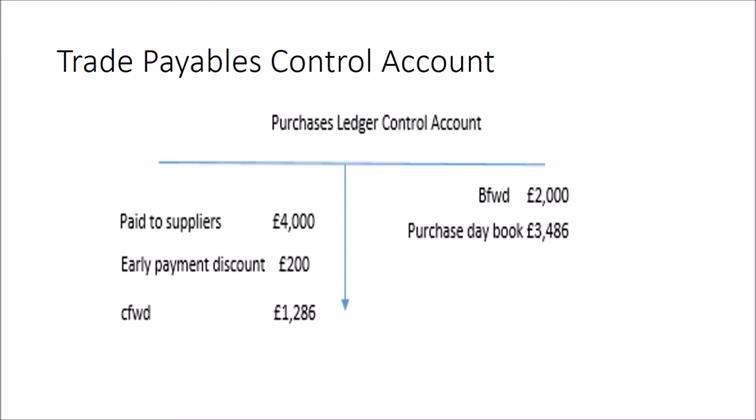The trade payables control account — also known as the purchase ledger control account or trade creditors account — is the total of all creditors from suppliers at the current point in time. It's a total of all purchases on credit, less any amounts paid to suppliers, credit notes received, and any early payment discounts taken advantage of. It's a T account like other T accounts in the general ledger. The name has changed from trade creditors to trade payables with the switch from UK GAAP to international financial reporting standards.